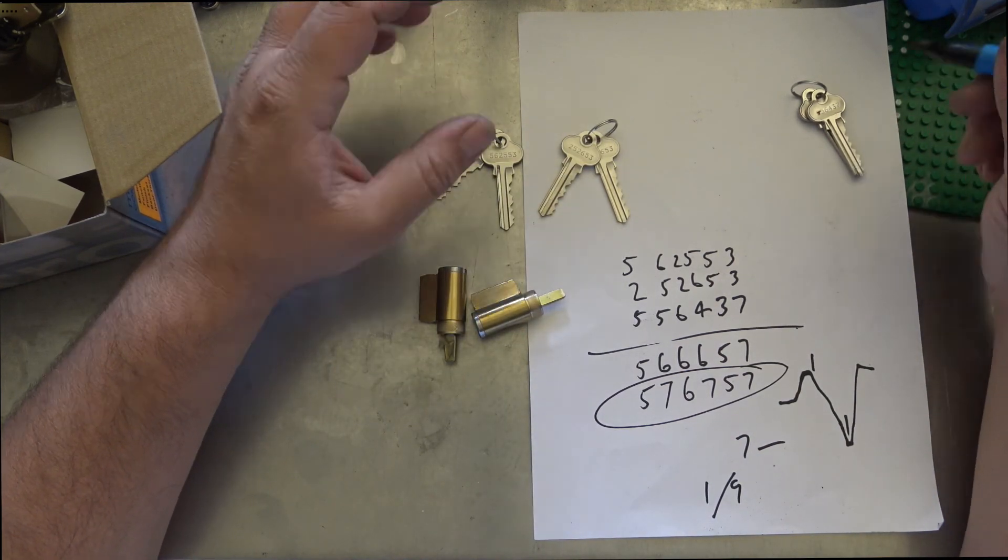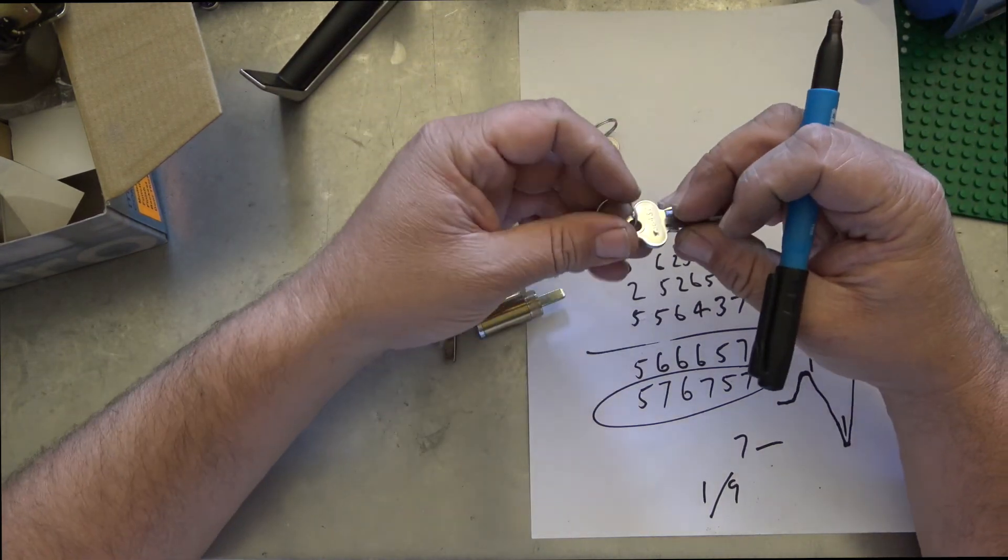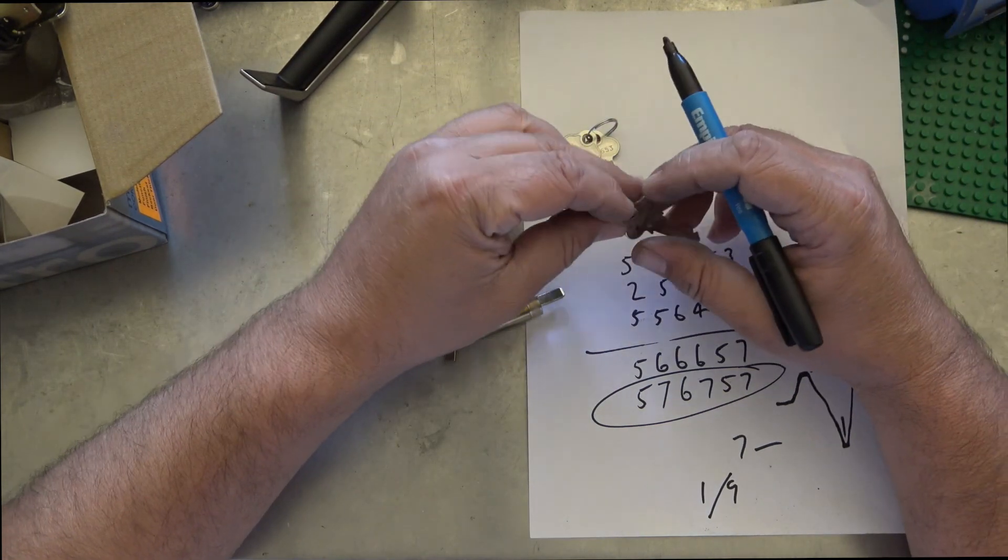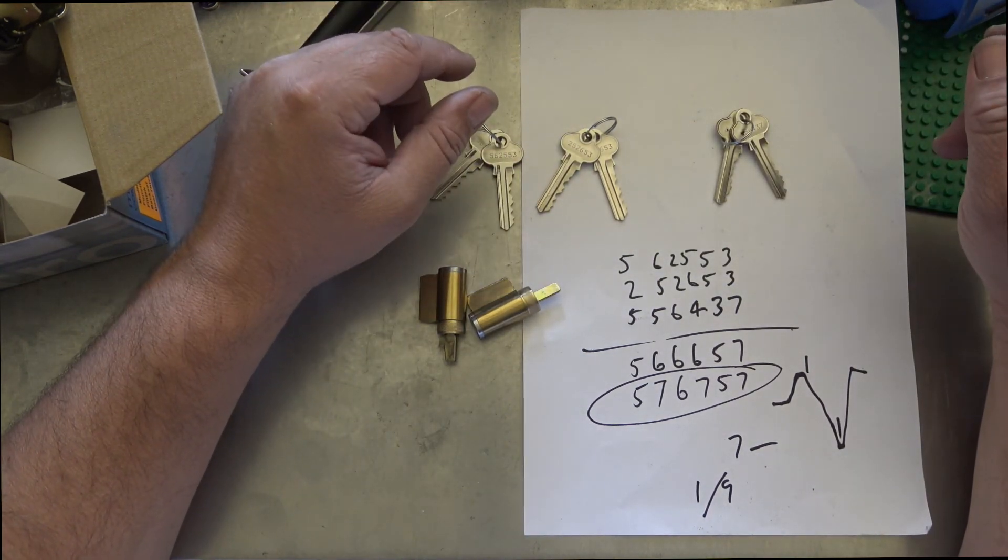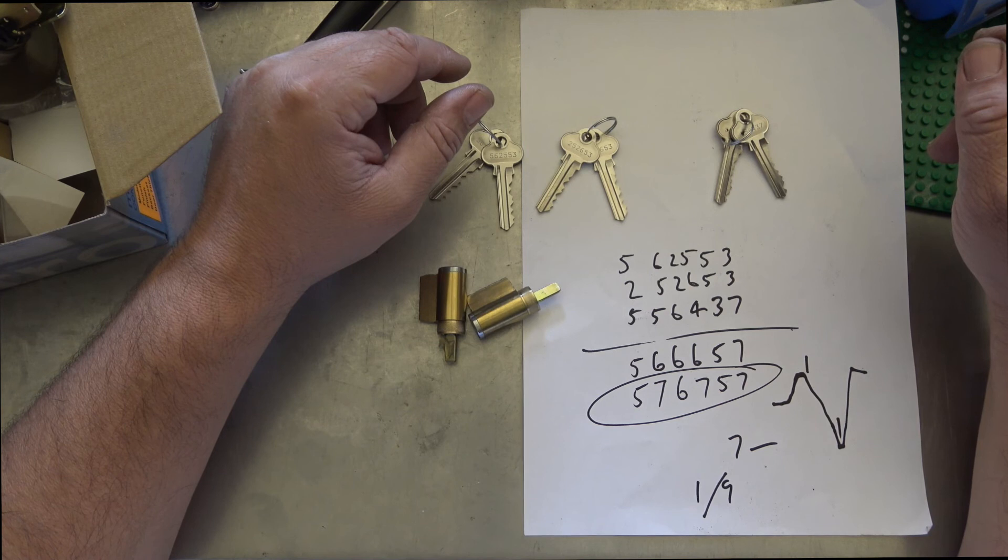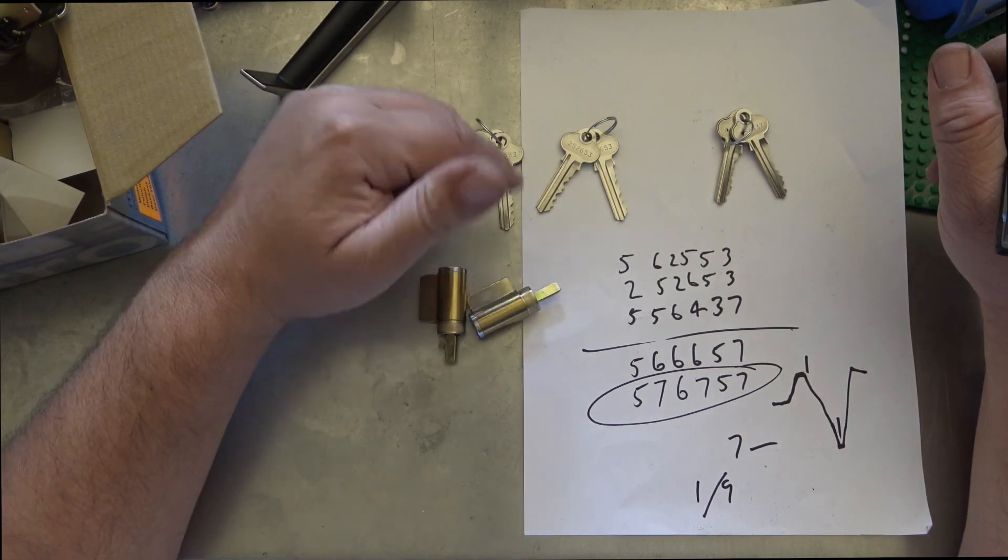So we're going to go with that code there. We're going to cut any of these keys to code because the combination we've got here is lower, which means we've got enough meat left on the top of this key to actually just cut it down. So we'll cut one to code and then we'll duplicate that to all the rest of them after we've pulled them apart. Then we should have all of them keyed alike once we recode the cylinders to suit.